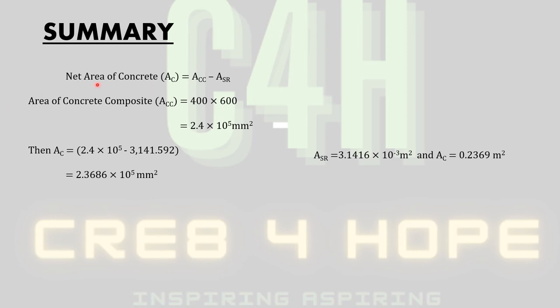To calculate the net area of the concrete, that will be equal to the difference of the area for the composite concrete minus the area of the total reinforcements within the concrete column. So the area of the concrete composite ACC is equal to 400 times 600, and that will yield 2.4 times 10 to the power of 5 millimeters squared.